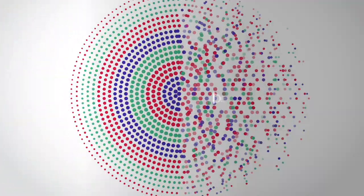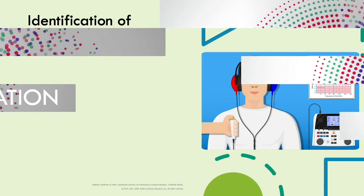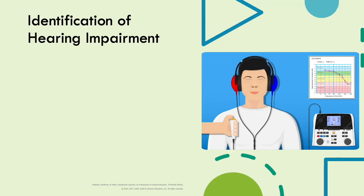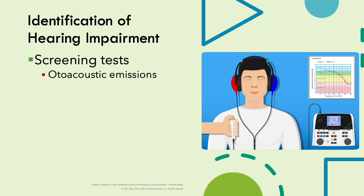Let's look at how we can identify hearing impairments. Hearing impairments are often identified through screening tests with otoacoustic emissions. You may remember taking one of these tests when you were in school — you would have on headphones and a little button in your hand, and the assessor would ask you to press the button anytime you heard a sound. The sound may be low such as 'boop,' or it could be higher. So this test is looking at the decibels, meaning the volume, and it may also be looking at frequency or pitch.